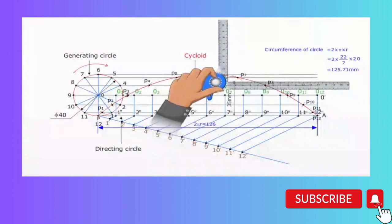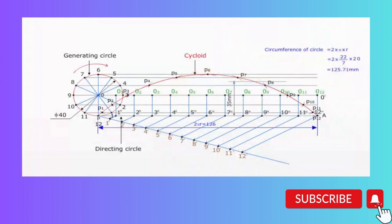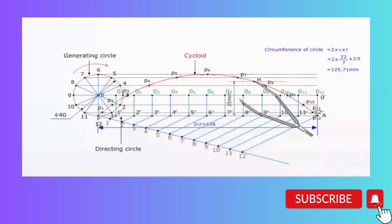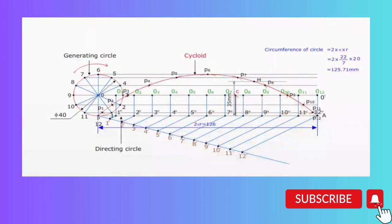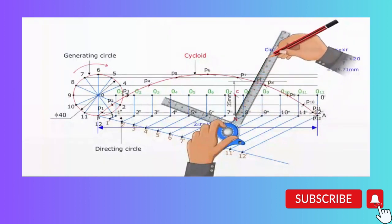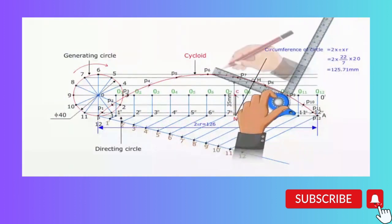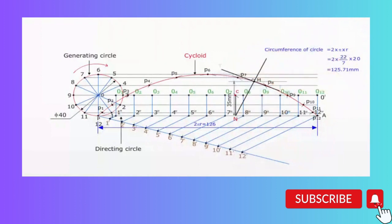Locate the point M on the curve which is at 35 mm from the directing circle. With radius 20 mm and M as centre, draw an arc intersecting the locus of the centre OO' at C. Through C, draw a line perpendicular to the directing line PA, meeting it at N — the point of contact of the generating circle when its centre moves to C. The line joining points M and N is the required normal, and a line TT perpendicular to it passing through M is the tangent to the cycloid.